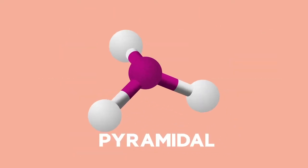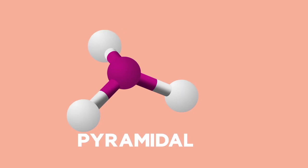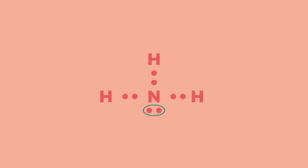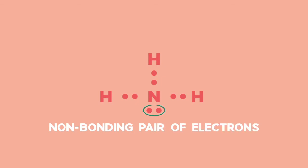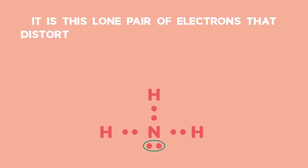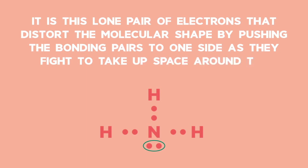When trying to decide whether a molecule is polar or non-polar, you can simply draw the Lewis dot diagram for the molecule. Then have a look at the central atom. If it has a lone pair of electrons, or a non-bonding pair of electrons, the molecule will be polar. It is this lone pair of electrons that distorts the molecular shape by pushing the bonding pairs to one side as they fight to take up space around the central atom.